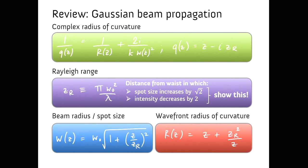We describe the beam in terms of two parameters: the real radius of curvature R(z) and the beam radius W(z). These form different parts of the complex radius of curvature q. The characteristic length over which the beam changes shape is the Rayleigh range, z_R — it tells us the distance over which the spot size increases by a factor of root 2, and the intensity goes down by a factor of 2.